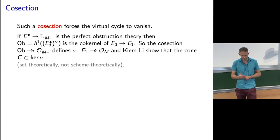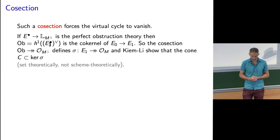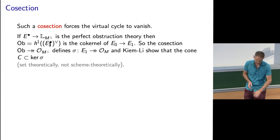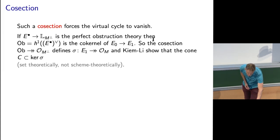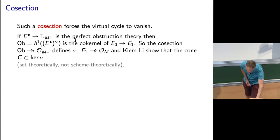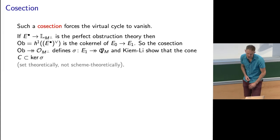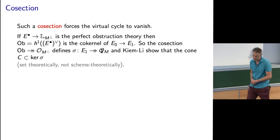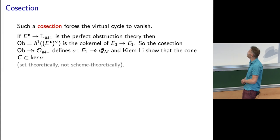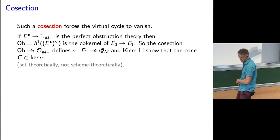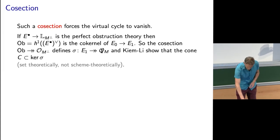A co-section — a map from the obstruction space to the structure sheaf — in our case a vector field by this duality, gives us a map from E1 by composition: E1 goes to the co-kernel (the obstruction space), goes to the structure sheaf. When that's onto, it means the virtual cycle vanishes.